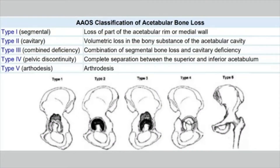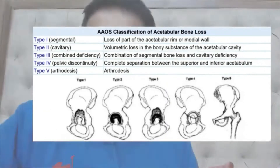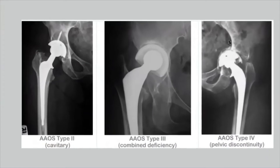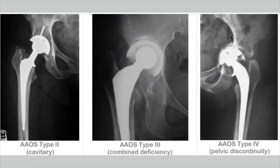Let me show you pictures. Type five is arthrodesis — complete fusion of the joint. This is House type two: there is cavitary loss in the superior part of the acetabulum. In type three, the combined type, there is segmental loss as well as cavitary loss, with medialization of the acetabular cup. Type four is pelvic discontinuity — there is complete discontinuity between the superior and inferior pelvis.